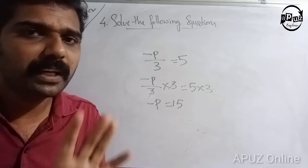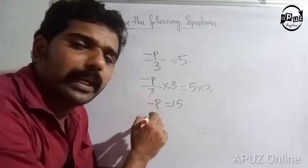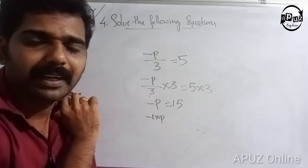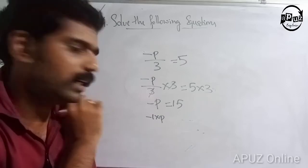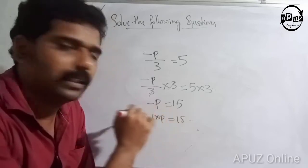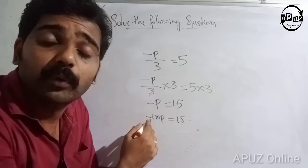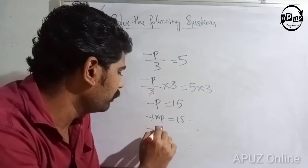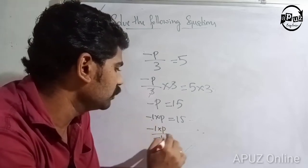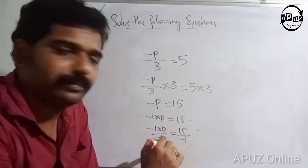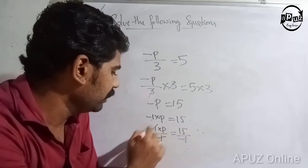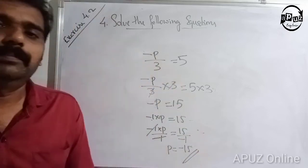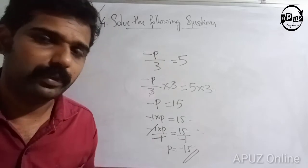Minus p is equal to 15. Divide both sides by minus 1: minus p divided by minus 1 is equal to 15 divided by minus 1. So p is equal to minus 15.